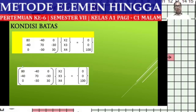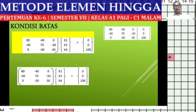After obtaining this reduced matrix, we can apply one of the numerical methods available — either Gauss or Gauss-Jordan elimination — to solve for the unknown variables. In this exercise, I use the Gauss-Jordan elimination method.